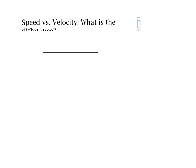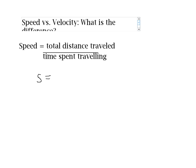Speed is distance traveled divided by time. We often will use S to mean speed, D to stand for distance, and T to stand for time.